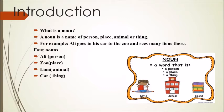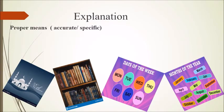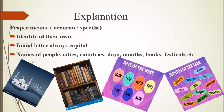Dear students, till now you don't know which one of them is a common noun and which one is a proper noun. But today, insha Allah, you are going to learn these two types of nouns: common nouns and proper nouns. Proper means accurate, specific — it has its own identity, its own brand name. The initial letter, meaning the first letter, is always capital. Names of people, cities, countries, days, months, books, festivals, etc. are all proper nouns.